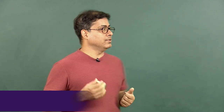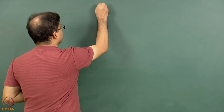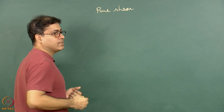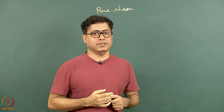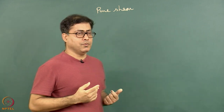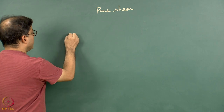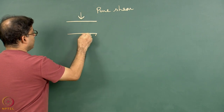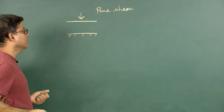We have done significant discussion on the simple shear zone and found it is not at all simple. Now we are going to see another kind of shear zone, known as pure shear. It is a process of deformation where there is a movement of the boundary perpendicular to itself — that can be called a pure shear zone.